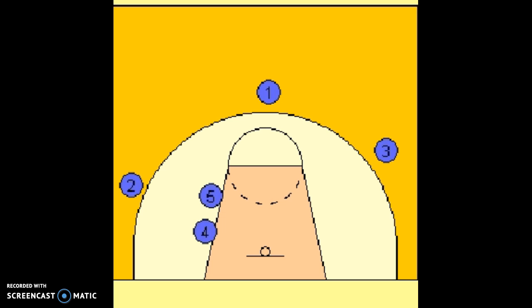So four setting a screen for three who's going to curl, and then they slip into the key. So one has all kinds of options. They can hit the two spot, they can hit three, and then they can also hit that four spot who's slipping in.